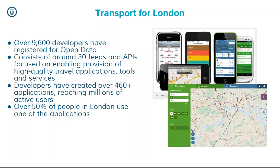Transport for London is probably one of the best and most cited examples of open data across the world. They made the decision to release all of their transport data as open data — everything from their live bus information, live underground information, the real location of subway cars and buses, prediction of when services will arrive, and timetable information. They released that as open data. Since then, 10,000 developers have signed up to access the data feed.